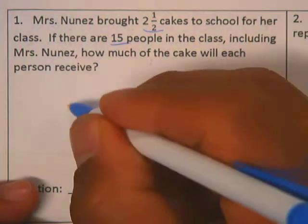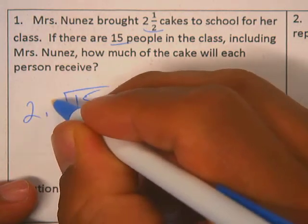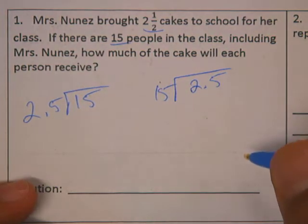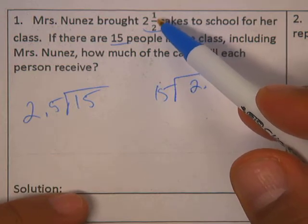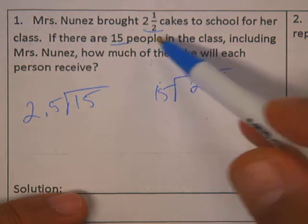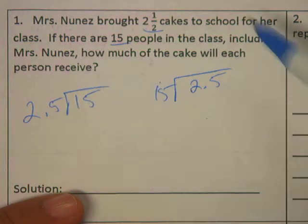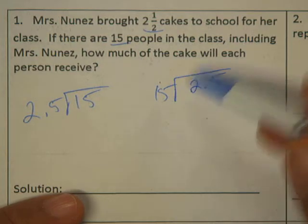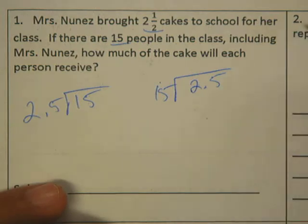So is it 15 divided by two and a half, which is 2.5, or 2.5 divided by 15? Well, ask yourself this: who's in the cake? Well, it's 15 people. So are you dividing 15 people by 2.5, or are you dividing 2.5 cakes amongst 15 people? Now I'll do both, and then you tell me what makes more sense — a logic problem.